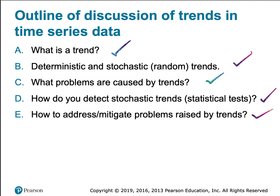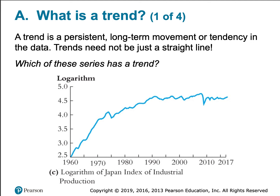Let's first focus on what is a trend. A trend is a persistent long-term movement or tendency in the data. When we are talking about trends we are not necessarily talking about a straight line. The way that the economy moves is hardly ever a straight line, but we still often find trends.